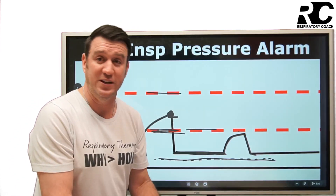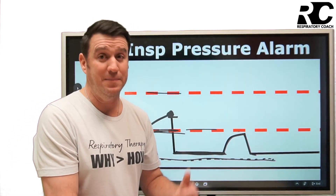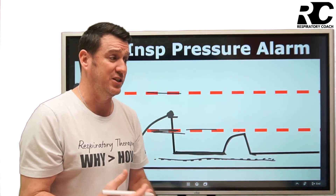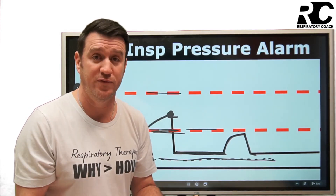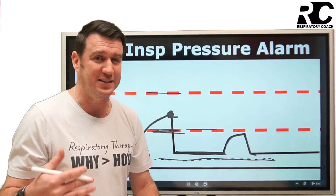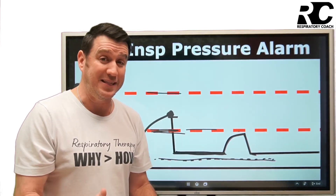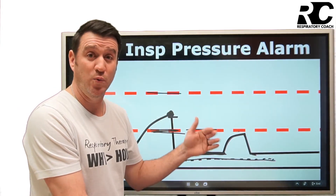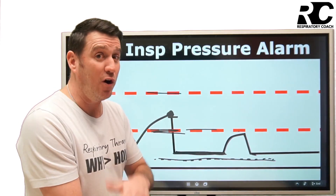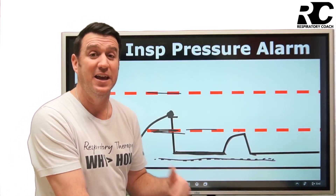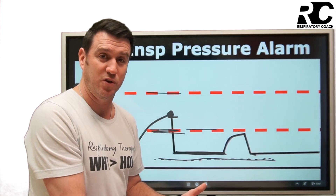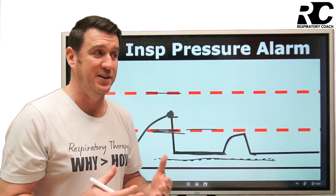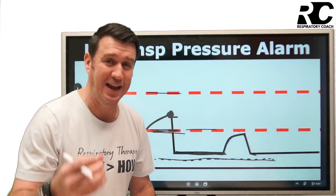In extreme cases, if a patient's compliance improved rapidly — which isn't typically something that happens quickly — their pressures could decrease in volume control mode, potentially dropping below the low inspiratory pressure alarm setting. You'd handle that by recognizing the patient is getting better and lowering the alarm setting to reflect the new baseline.